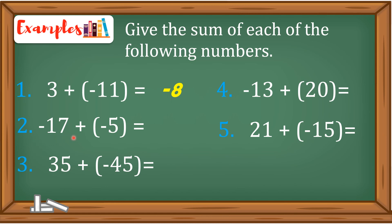Number 2 is negative 17 plus negative 5. Since they have the same sign, just add them and then copy the sign. So the answer is negative 22. Number 3, we have positive 35 plus negative 45. They have different signs, so you subtract them and copy the sign of the higher absolute, which is negative. So the answer is negative 10. Number 4 is negative 13 plus positive 20. Different sign again — you subtract them. The sign of the higher absolute number is positive, so positive 7 is the answer. Number 5, 21 plus negative 15. They have different signs, so you subtract again. The answer is positive 6.